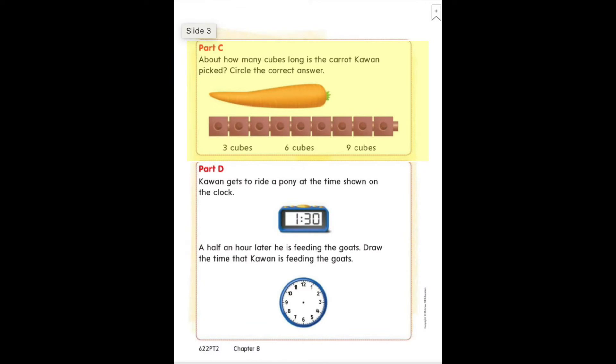If you turn the page, it should look just like my screen now. Part C says, about how many cubes long is the carrot Kawan picked? Circle the correct answer. So if you see below the cubes, you have answer choices: three cubes, six cubes, nine cubes. Count about how many cubes long the carrot is and circle the answer.